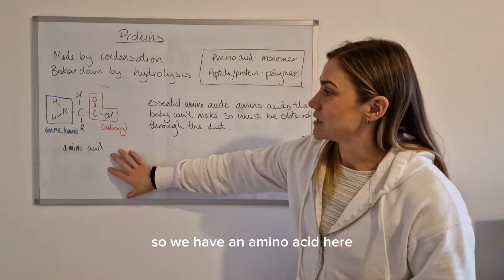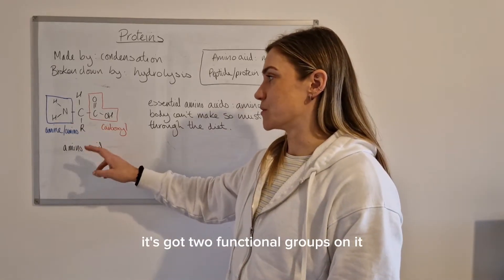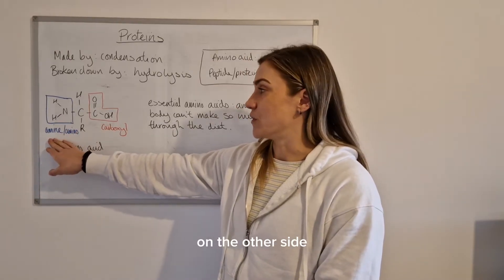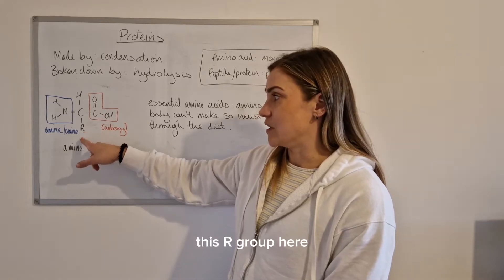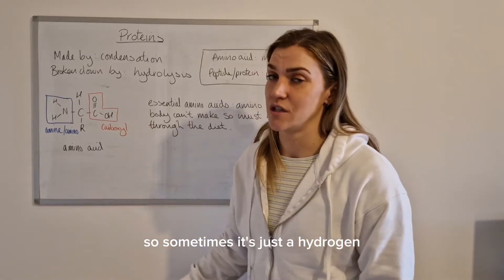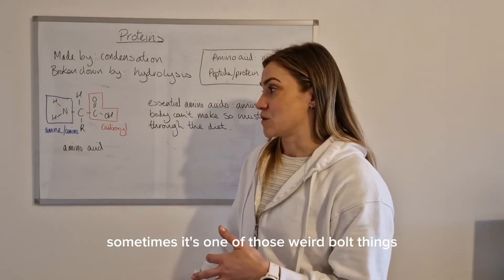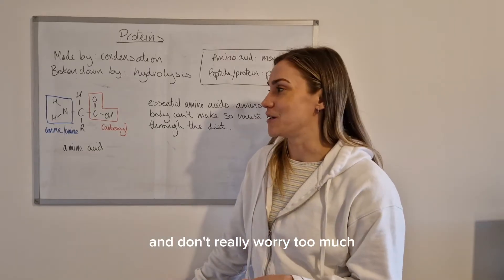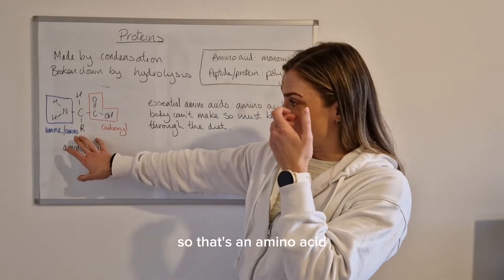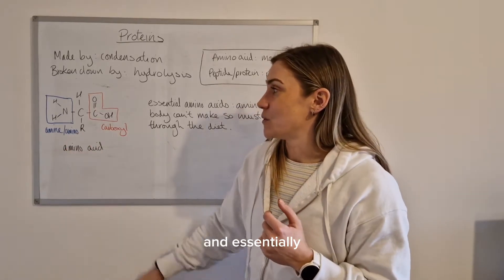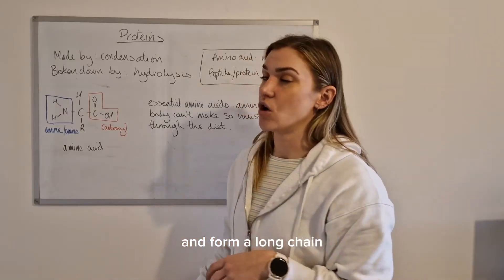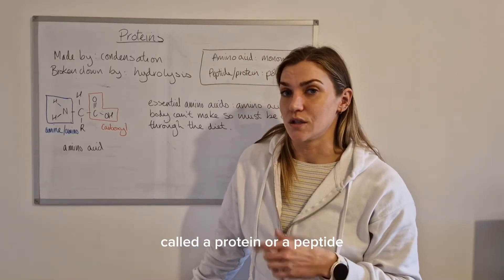So we have an amino acid here, it's got two functional groups on it. It's got a carboxyl on one side and then it's got an amine or it can also be called an amino group on the other side. This R group here can be anything, it just depends on what amino acid you have. So sometimes it's just a hydrogen, sometimes it's CH3, sometimes it's one of those weird bulk things but don't really worry too much about the R group, you only ever really need to copy them down. So that's our amino acid and that's the two functional groups, and essentially what happens is these functional groups react with each other on other amino acids and form a long chain called a protein or a peptide.